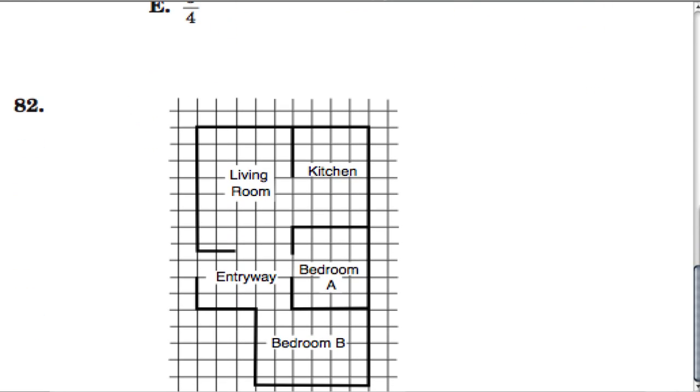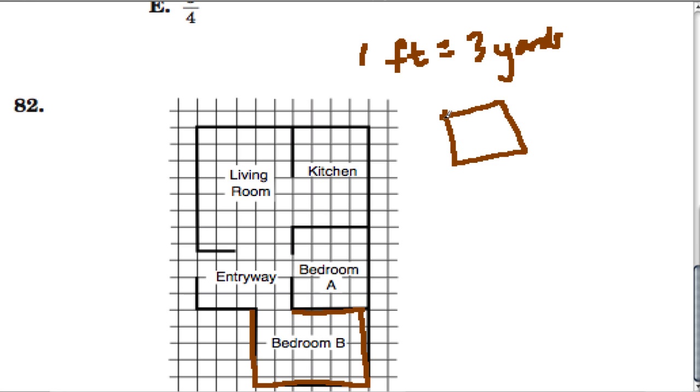In this problem right here, they want us to know how do you convert square feet to yards? We know that one foot has to equal three yards. They want to know, what is the area of bedroom B? I think the question got cut off here, but what they're saying is what's the exact area of this bedroom? So if one foot equals three yards, we're dealing with square feet. So that means it's one foot by one foot.